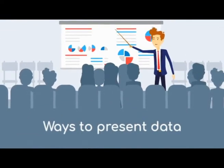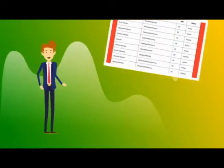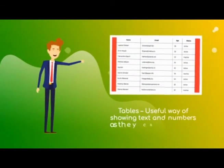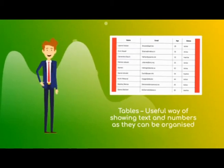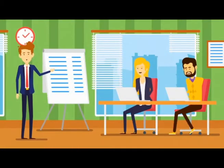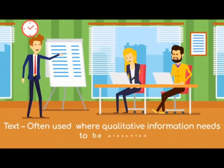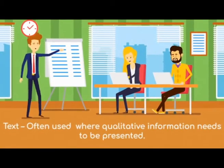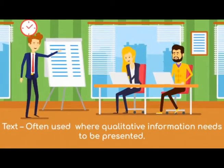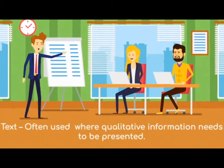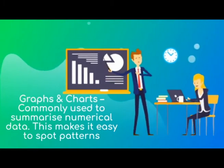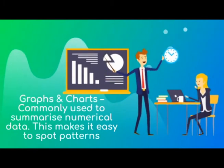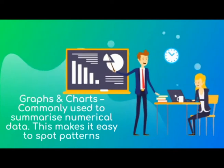There are many ways in which to present data. This can be in table format, which is a useful way of showing text and numbers as they can be organized with headings. Text is often used where qualitative information needs to be presented. Graphs and charts are commonly used to summarize numerical data, as it makes it easy to spot patterns.